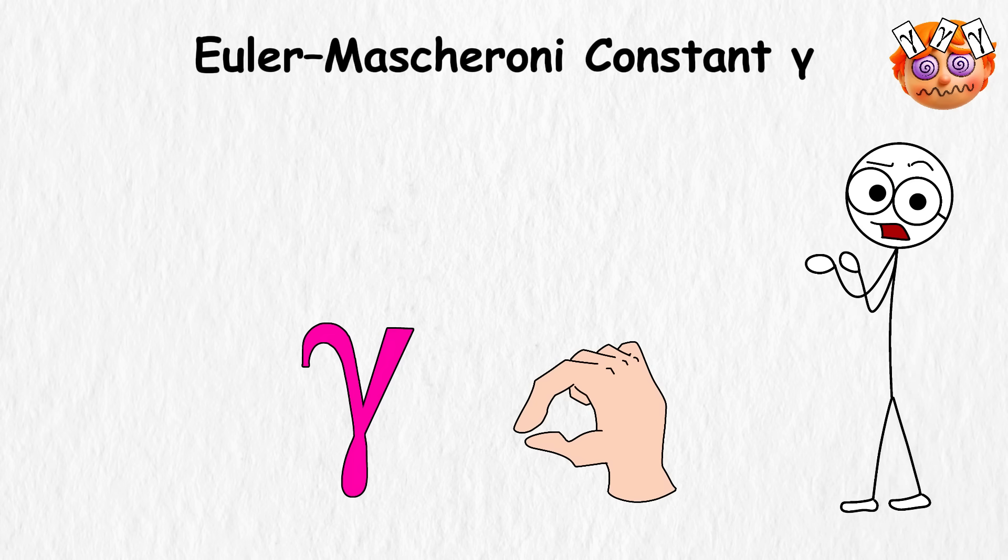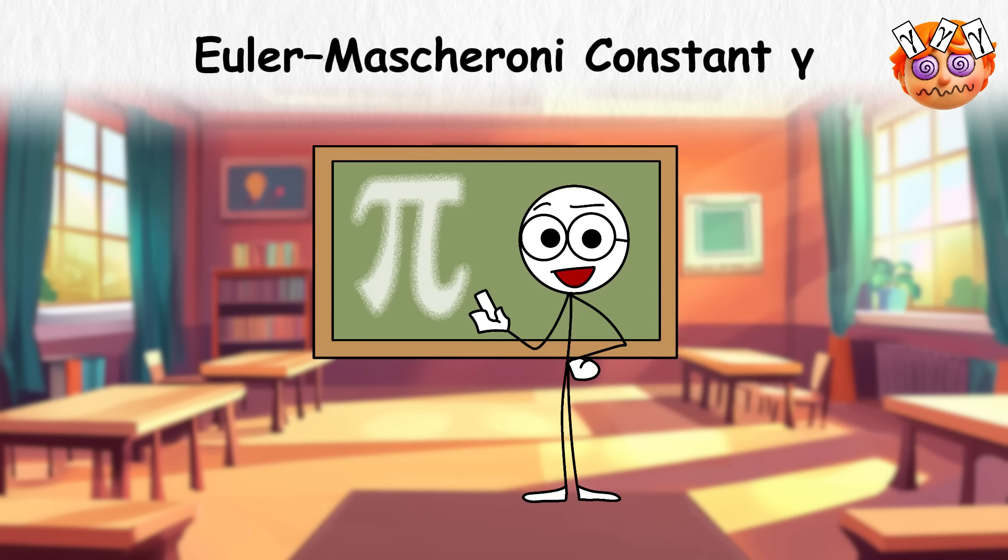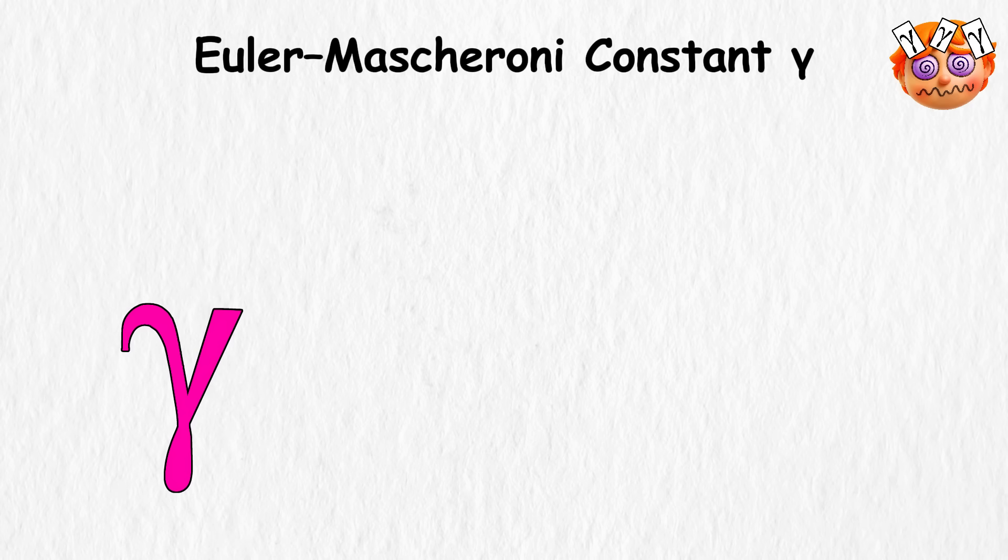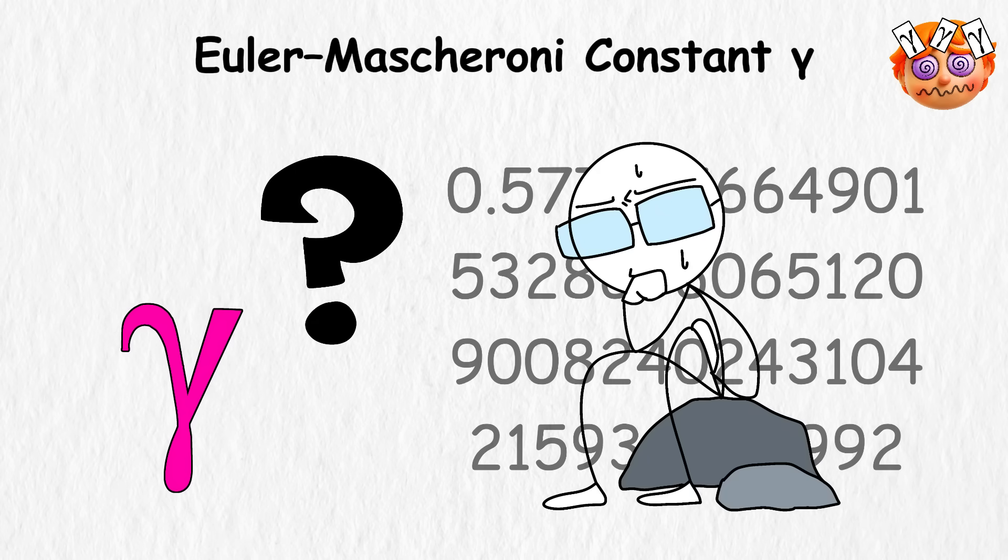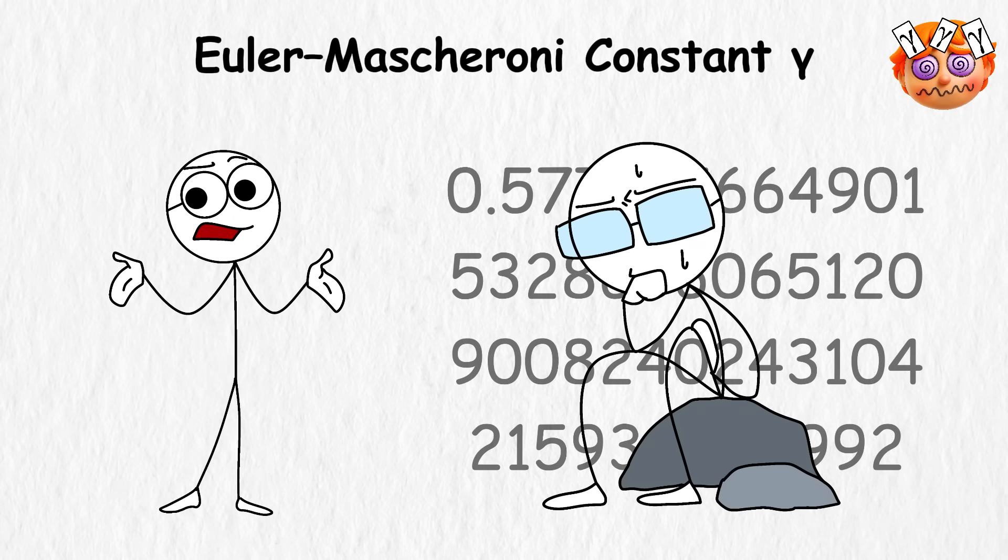Here's the strange part, we don't actually know what kind of number it is. Some numbers are rational, which means you can write them as neat as fractions, like 42 over 13. Others are irrational, like pi, which never fits into a fraction. With gamma, nobody really knows. Mathematicians have calculated it to billions of digits, but no proof has ever shown whether it belongs on the rational side or the irrational side.